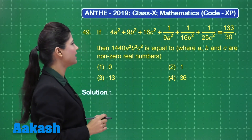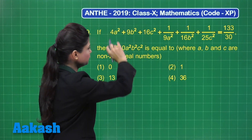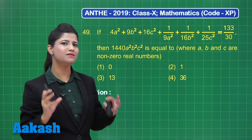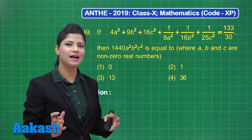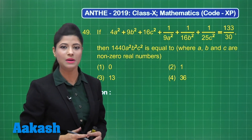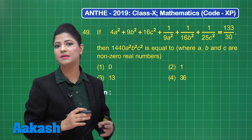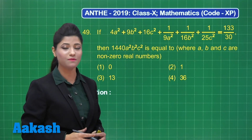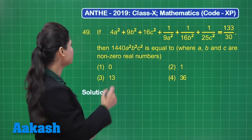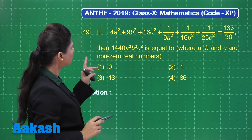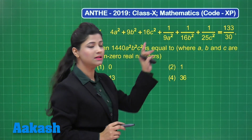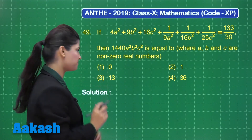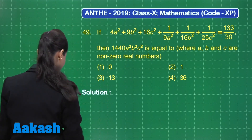On the left-hand side, I have 4a² and 1 upon 9a². This is just like the identity a² + b², which can be expressed as (a − b)² + 2ab. We can consider here a as 2a and b as 1 upon 3a, and express it in the same form.